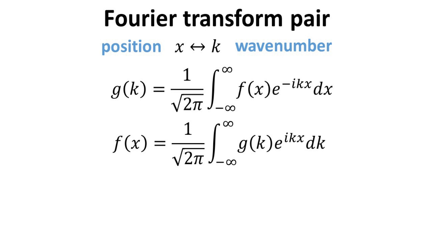First, we set the stage and consider functions in x and its reciprocal domain in k. Let's denote these functions to be f of x and g of k respectively. We assume they are Fourier transform pair related through the Fourier transformation as shown.